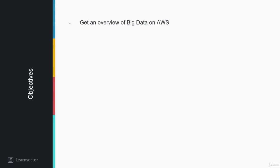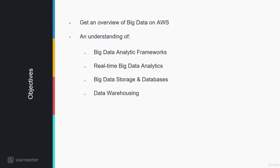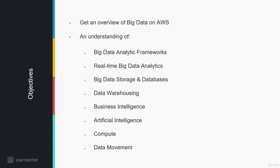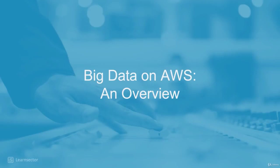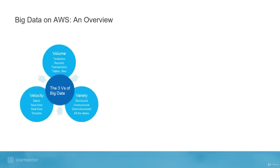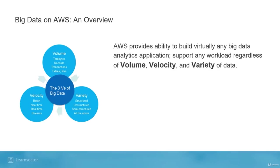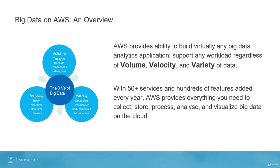The overview section will discuss different aspects of big data: big data analytical frameworks, real-time big data analytics, big data storage and databases, data warehousing, business intelligence, artificial intelligence, and the compute section. Big data talks about three Vs of data: volume, velocity, and variety. AWS provides the ability to build virtually all applications without worrying about these three factors. With 50 plus services and hundreds of features added every year, AWS provides everything you need to collect, store, process, analyze, and visualize big data on the cloud.